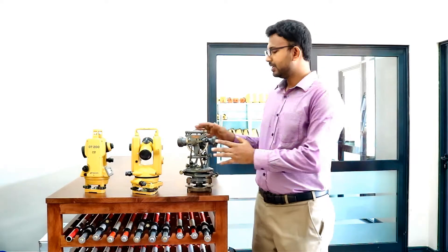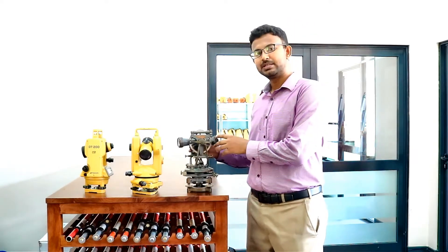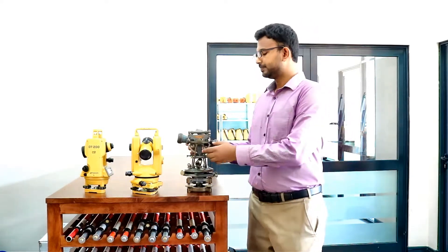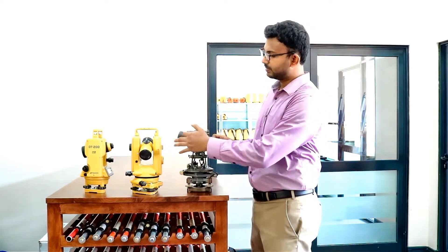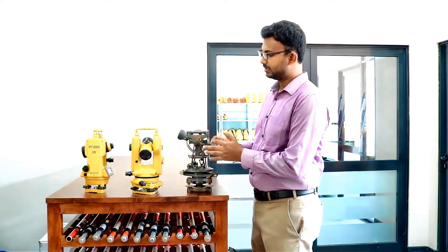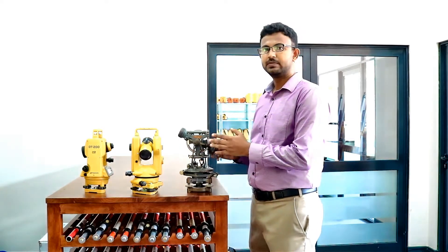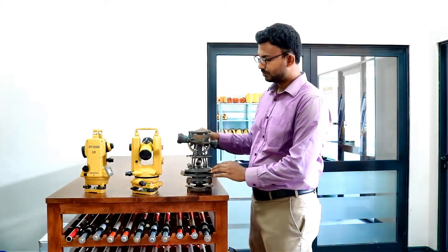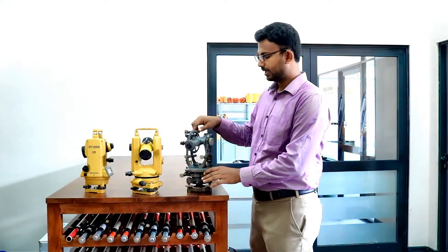Vernier theodolites had the similar appearance to the vernier transit theodolites. But here, you see, there's a vertical circle attached together with a telescope to measure the vertical angle. Not only that, there's a separate horizontal circle attached to find the horizontal angle.